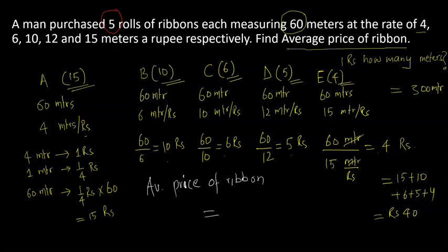Will be given by total length purchased, which is 300 meters, divided by total price paid for all the rolls, 40 rupees. And that gives you 7.5 meters a rupee.